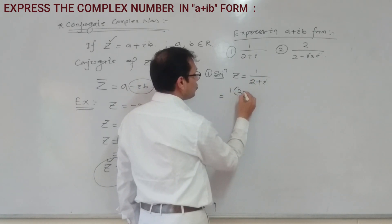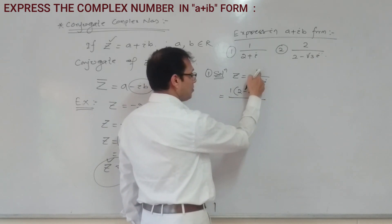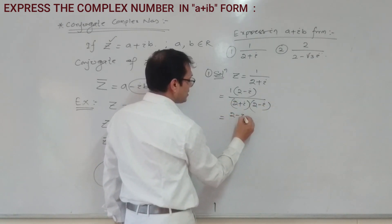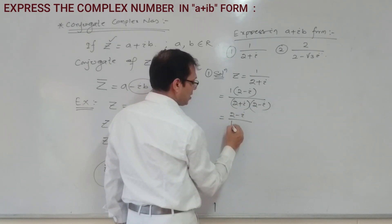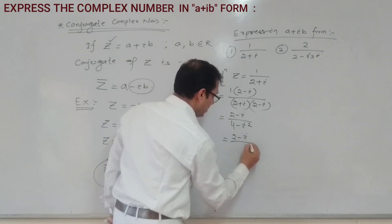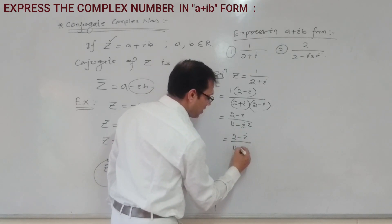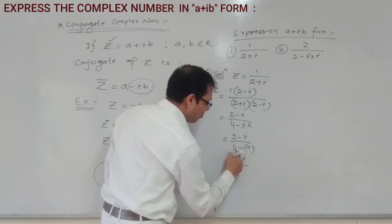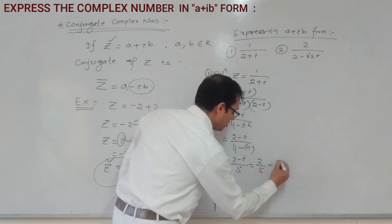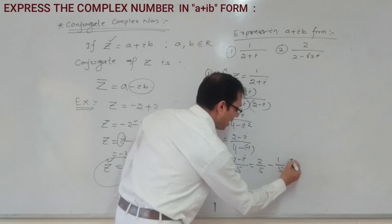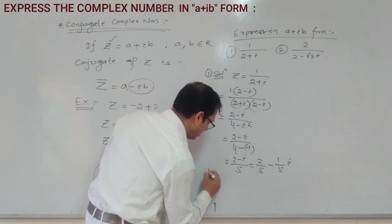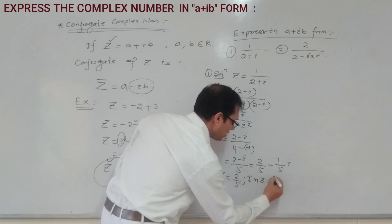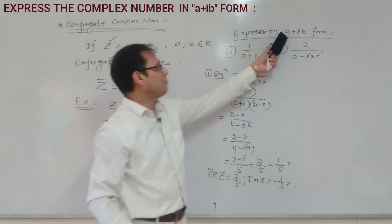Multiply numerator and denominator by (2 minus i). That gives (2 minus i) divided by (2 plus i)(2 minus i), which equals (2 minus i) divided by (a squared minus b squared) = 4 minus i squared. Since i squared is minus 1, denominator is 4 plus 1 equals 5. So the result is (2 minus i) by 5, which gives 2 by 5 minus i by 5. Real part is 2/5, imaginary part is minus 1/5.